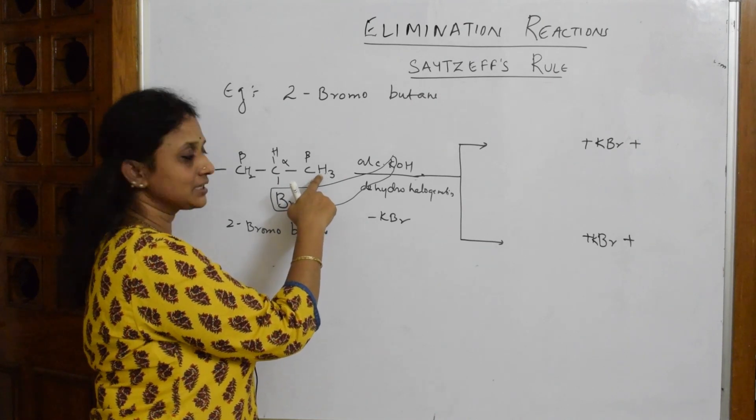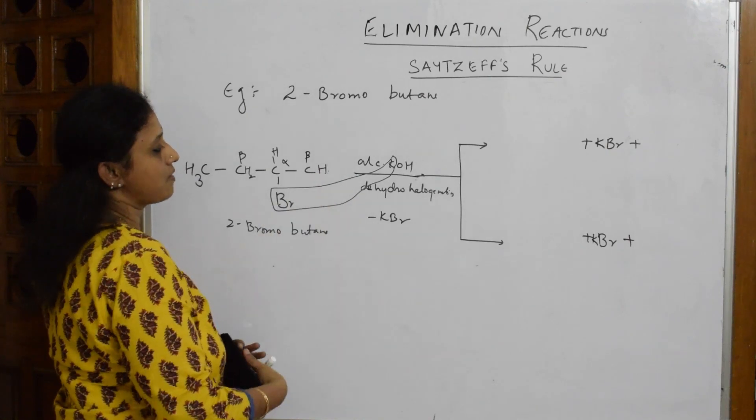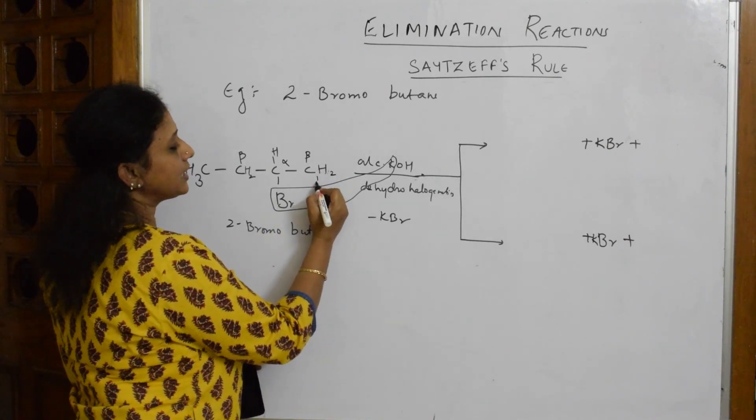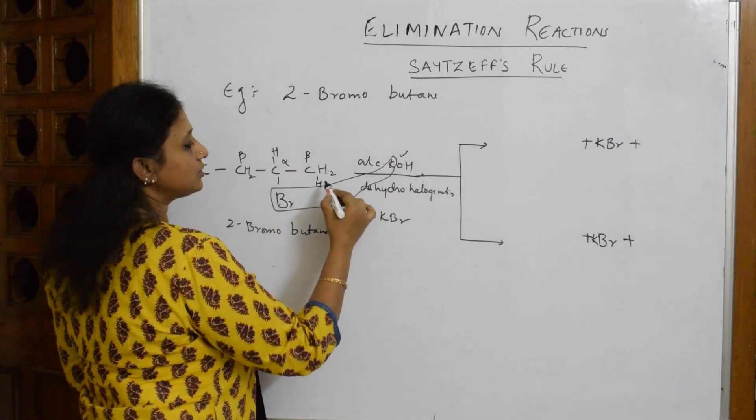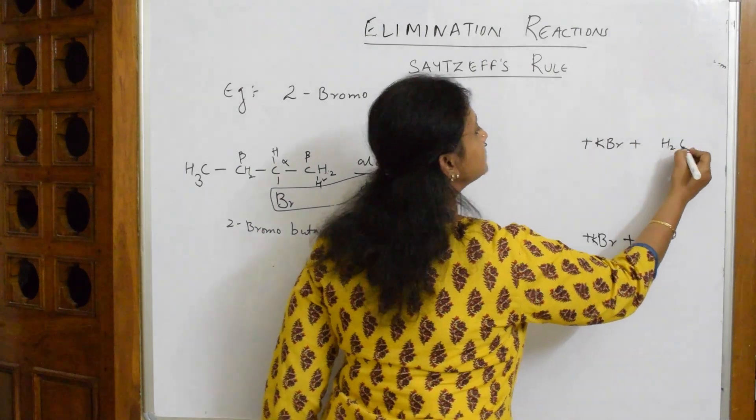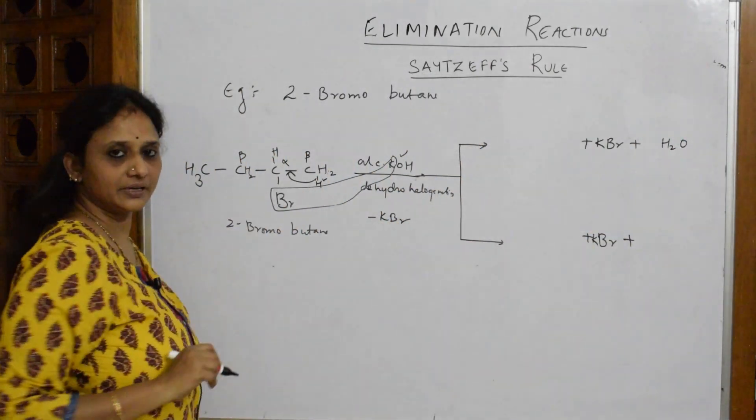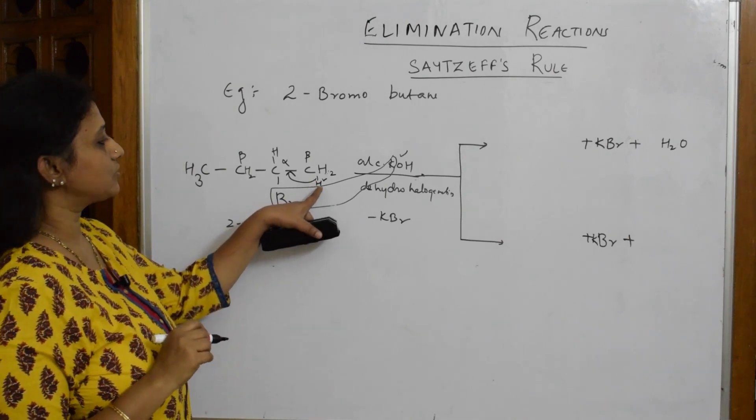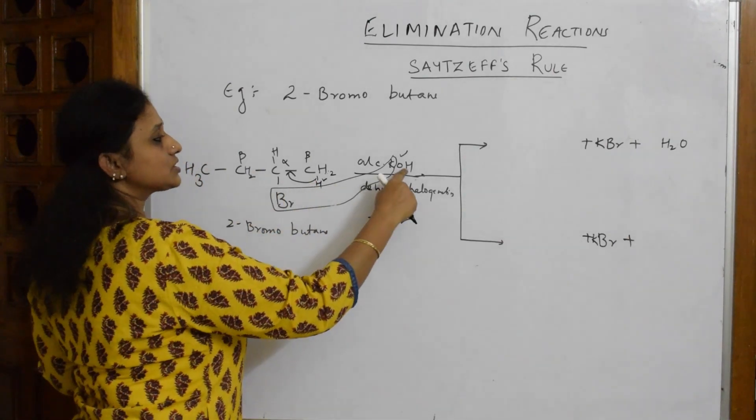If I pick up hydrogen from this, this water and this hydrogen comes out as water. Then what's going to happen? This bond is going to shift here. So this hydrogen - because I have to do dehydrohalogenation - this water has come out.